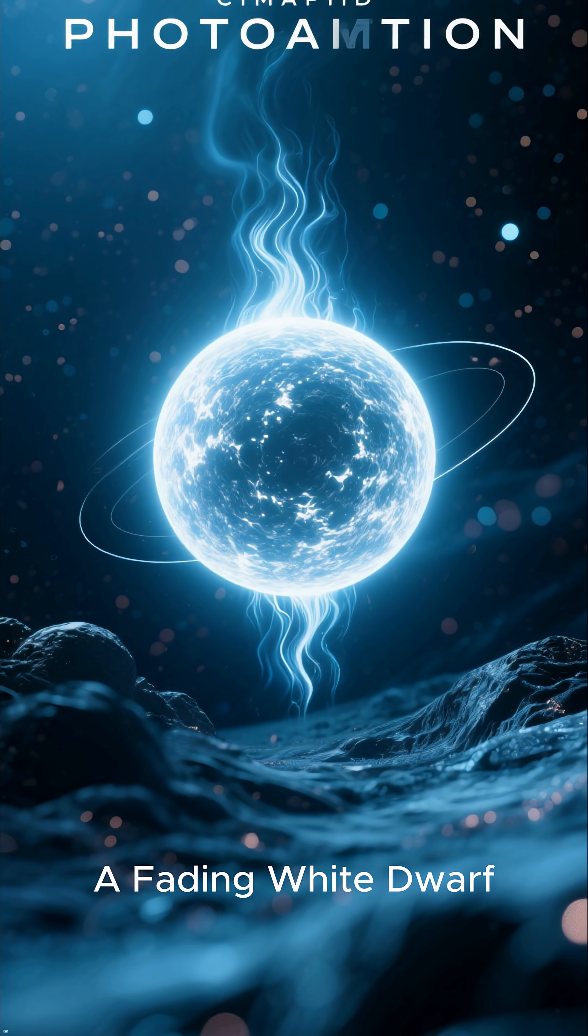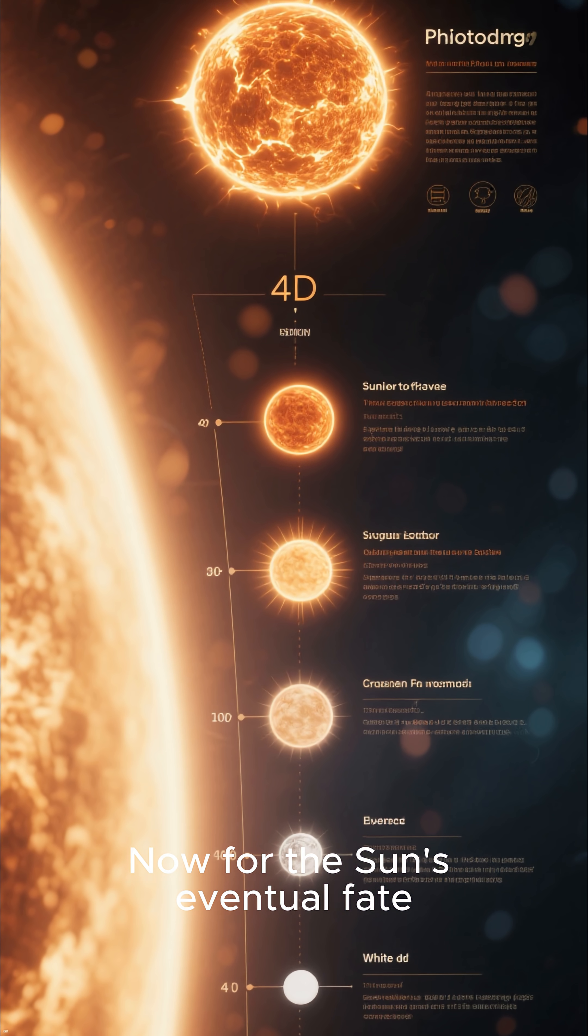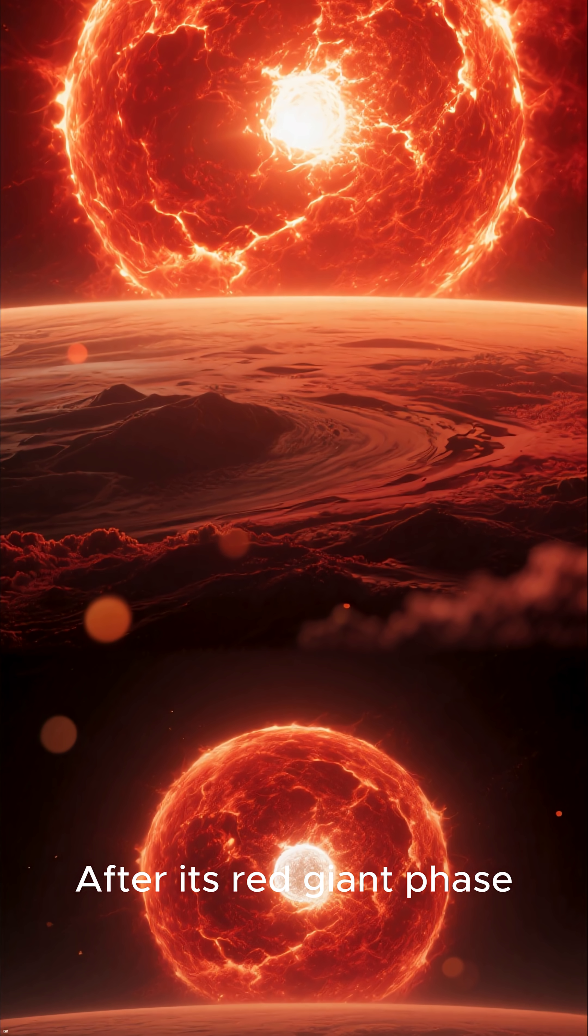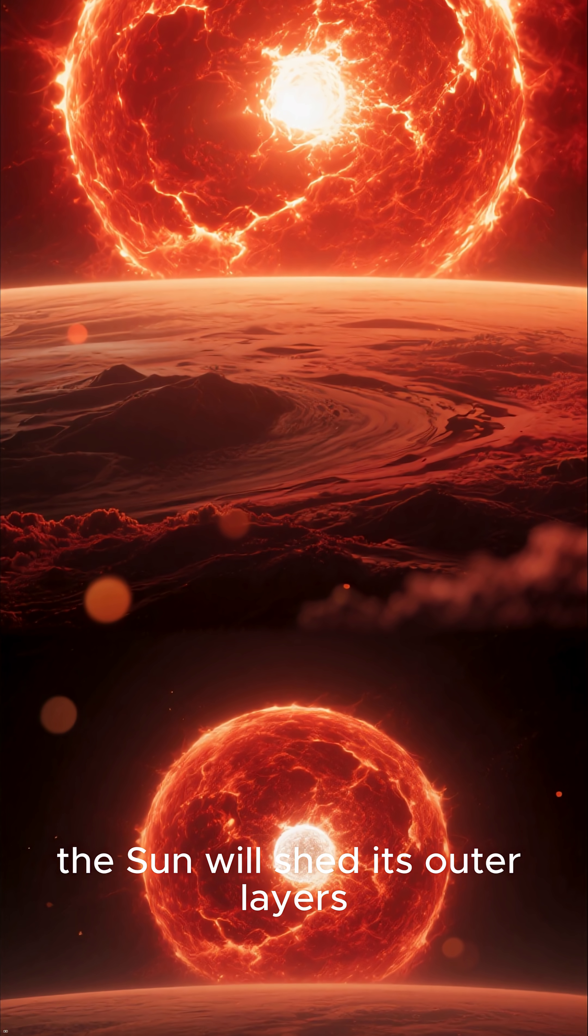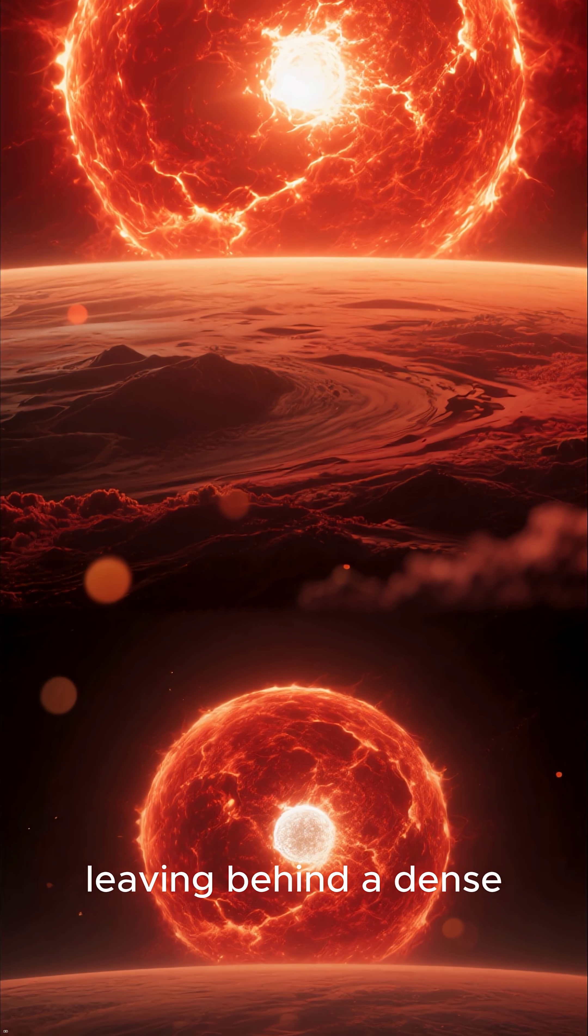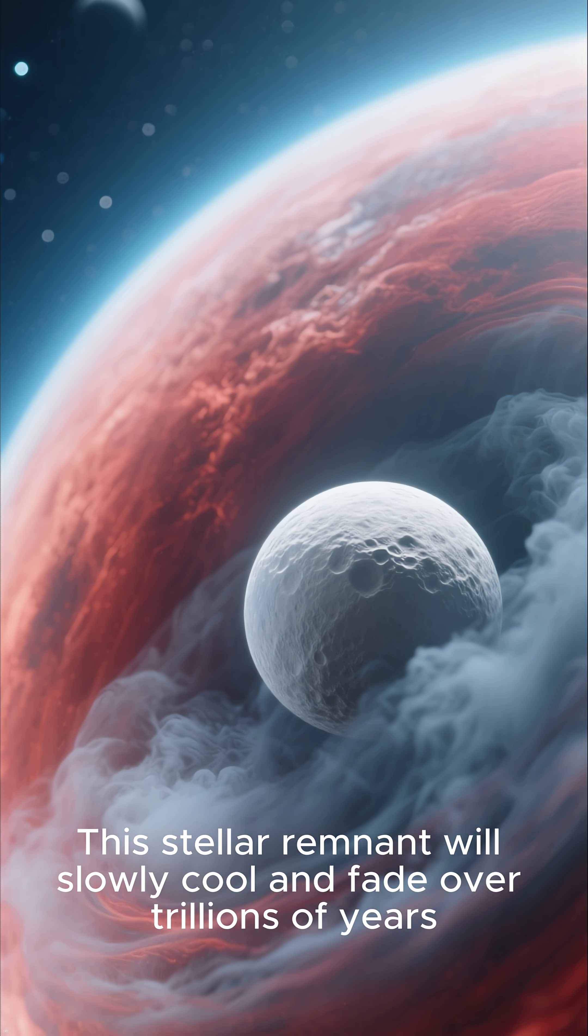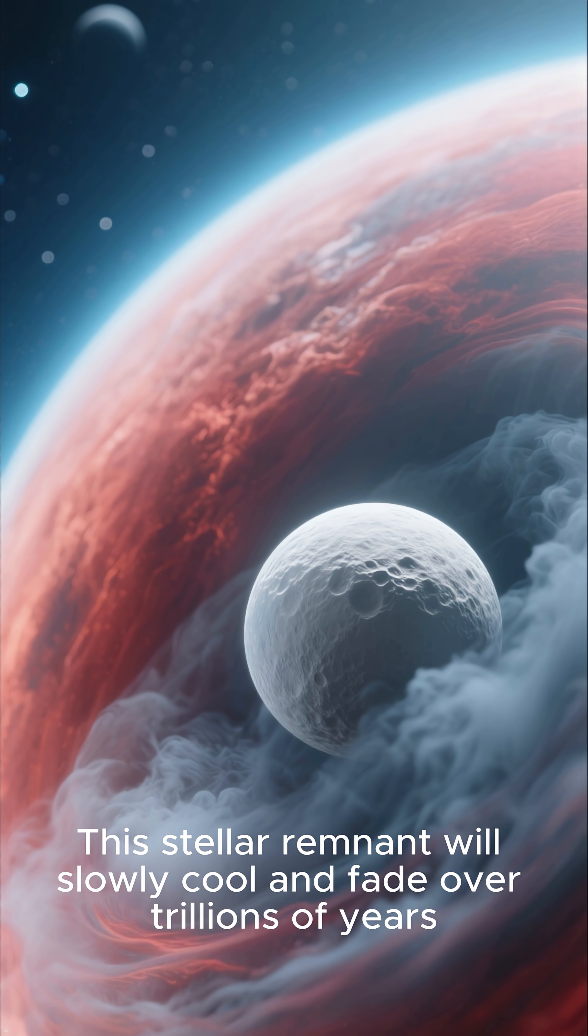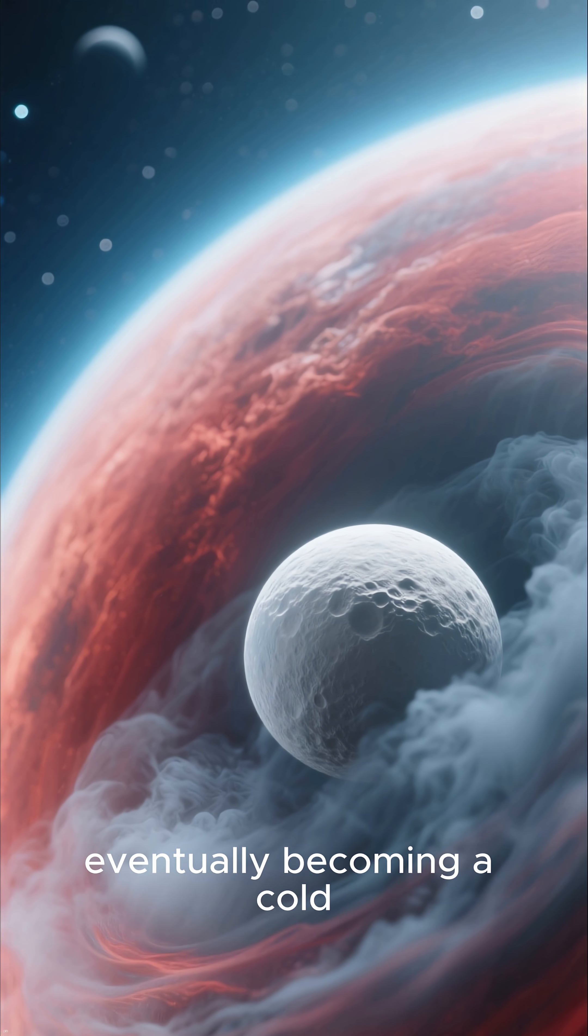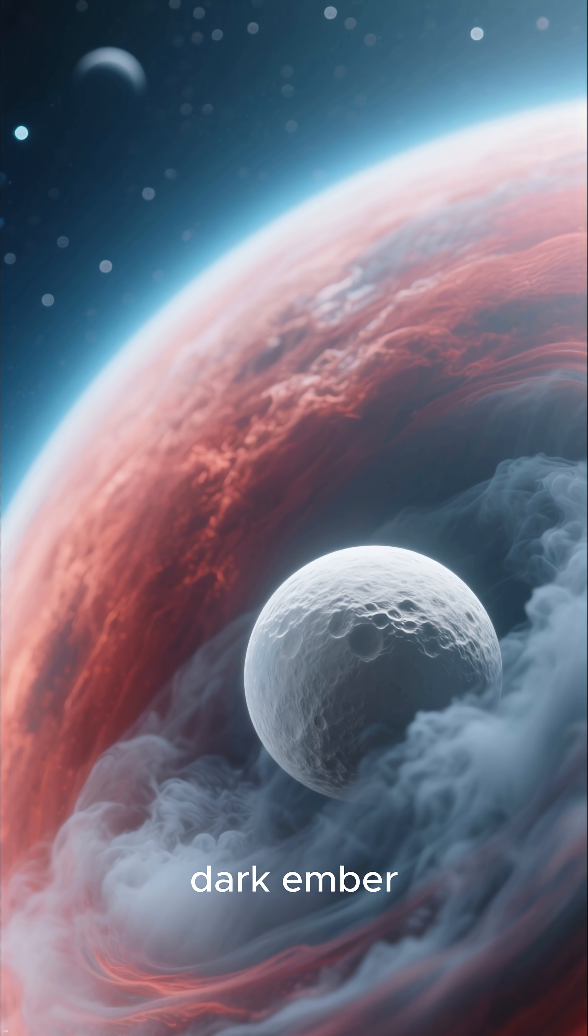A fading white dwarf. Now for the sun's eventual fate. After its red giant phase, the sun will shed its outer layers, leaving behind a dense, hot core known as a white dwarf. This stellar remnant will slowly cool and fade over trillions of years, eventually becoming a cold, dark ember.